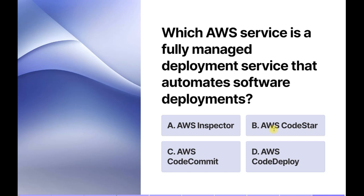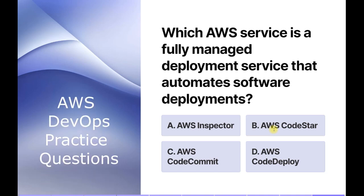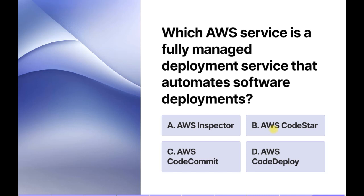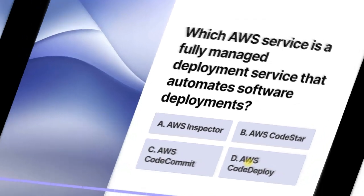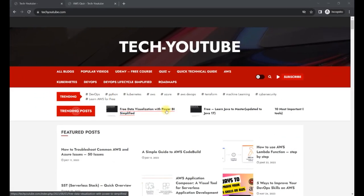In this question they are asking: which AWS service is a fully managed deployment service that automates software deployment? The options are: AWS Inspector, AWS CodeStar, AWS CodeCommit, and AWS CodeDeploy. AWS Inspector is a security assessment service. AWS CodeStar is used for developing, building, and deploying applications. AWS CodeCommit is a version control system. AWS CodeDeploy is a service that automates code deployment and makes it easier to release new features. So the answer is option D: AWS CodeDeploy.